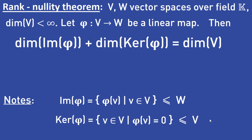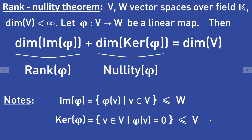If you are wondering why it is called the rank-nullity theorem, here comes the answer. The dimension of the image of phi is also called the rank of phi, and the dimension of the kernel of phi is also called the nullity of phi. That is the reason why it is called the rank-nullity theorem.